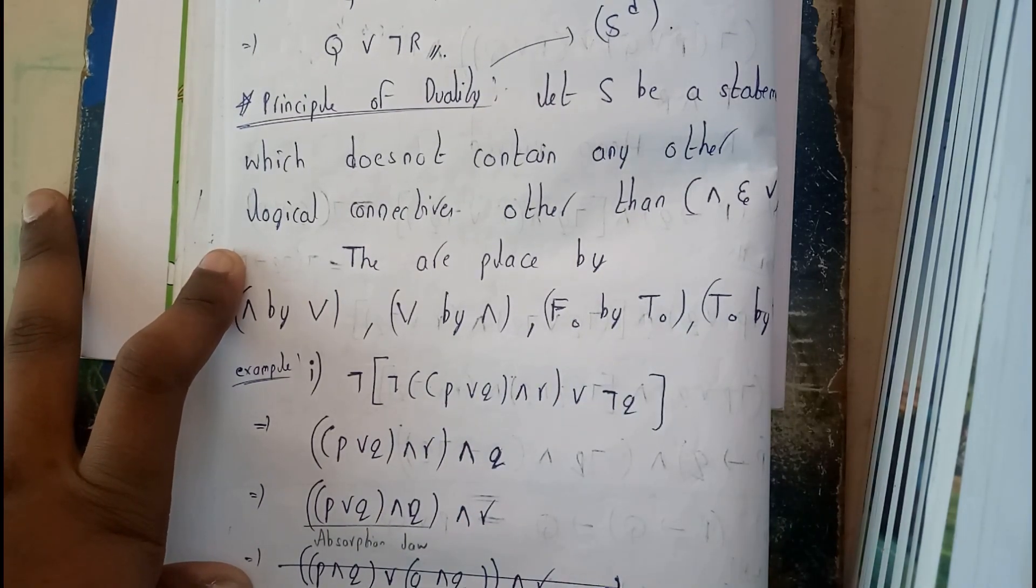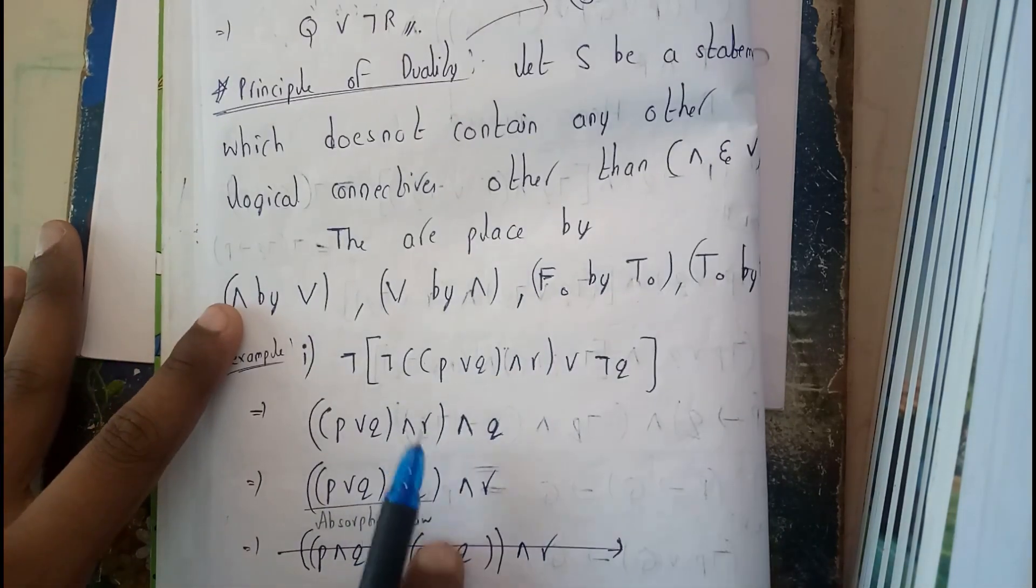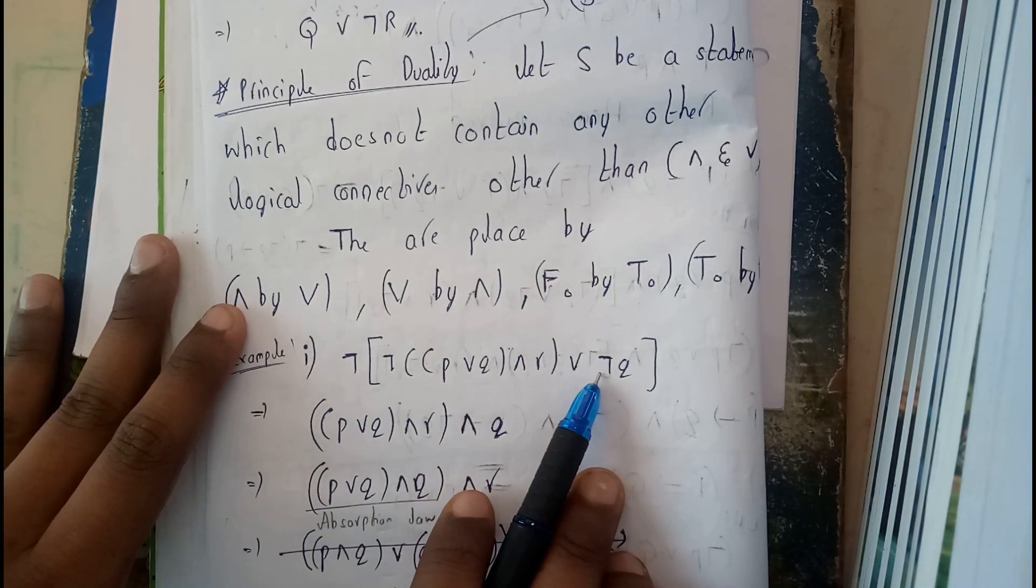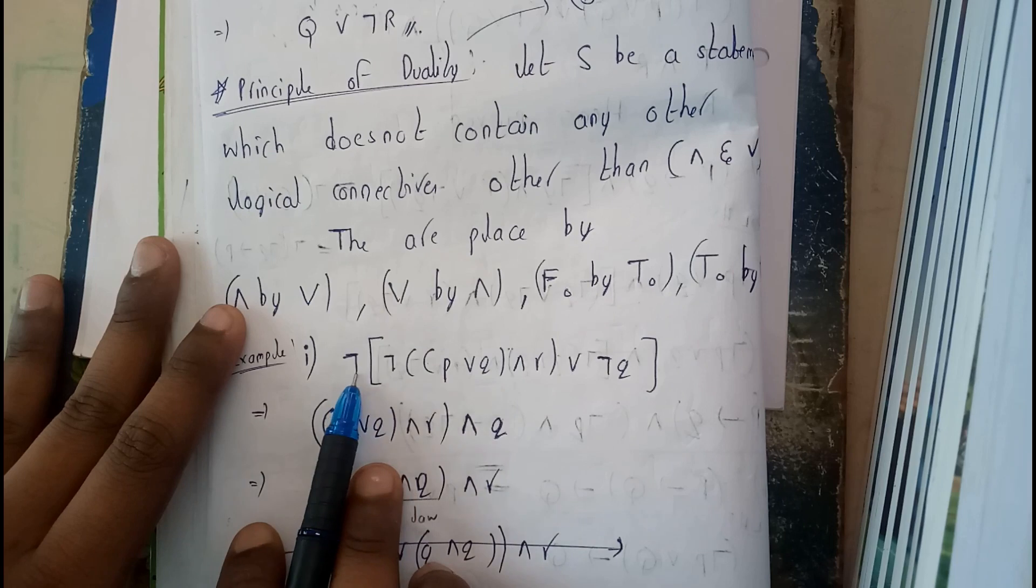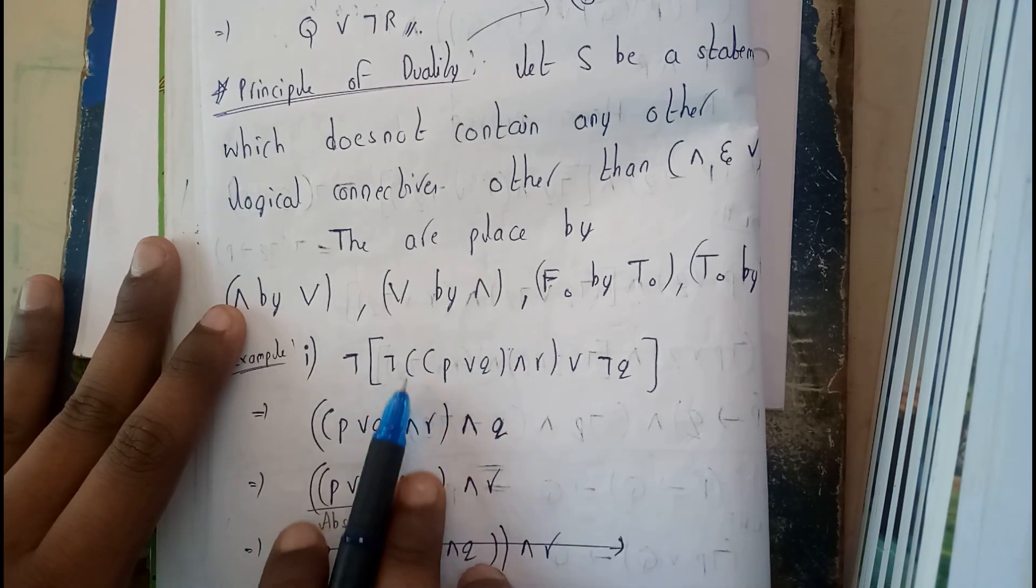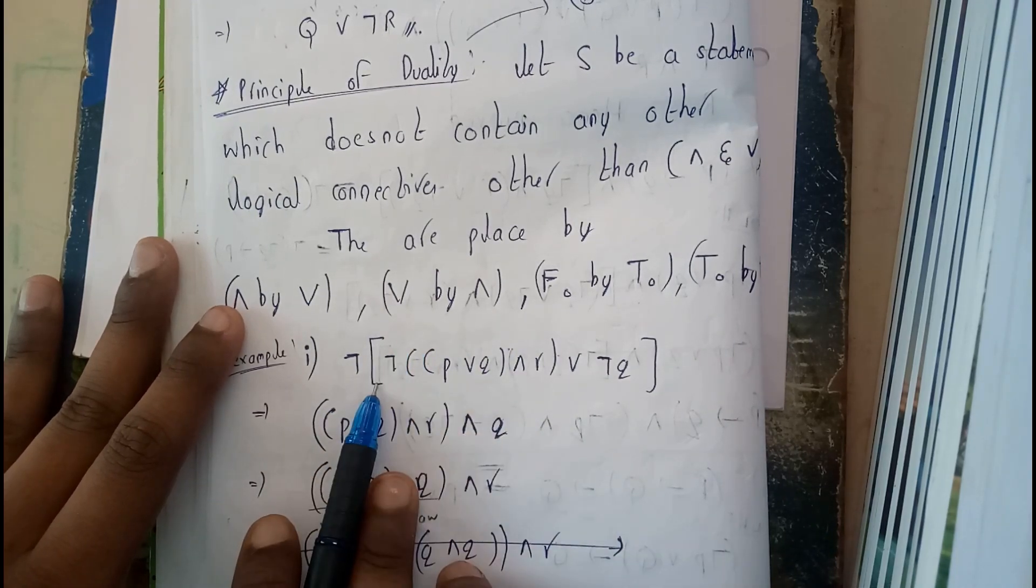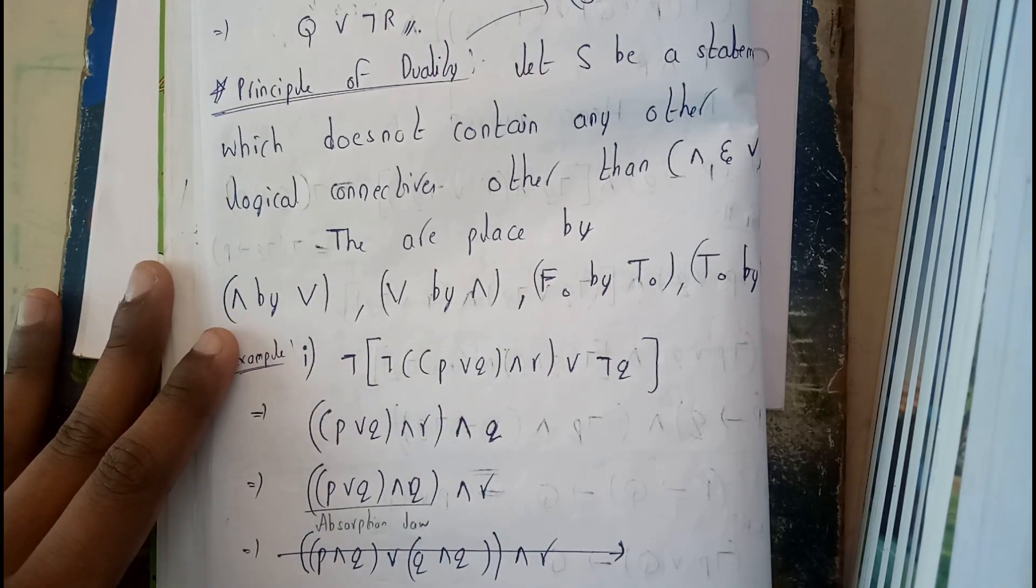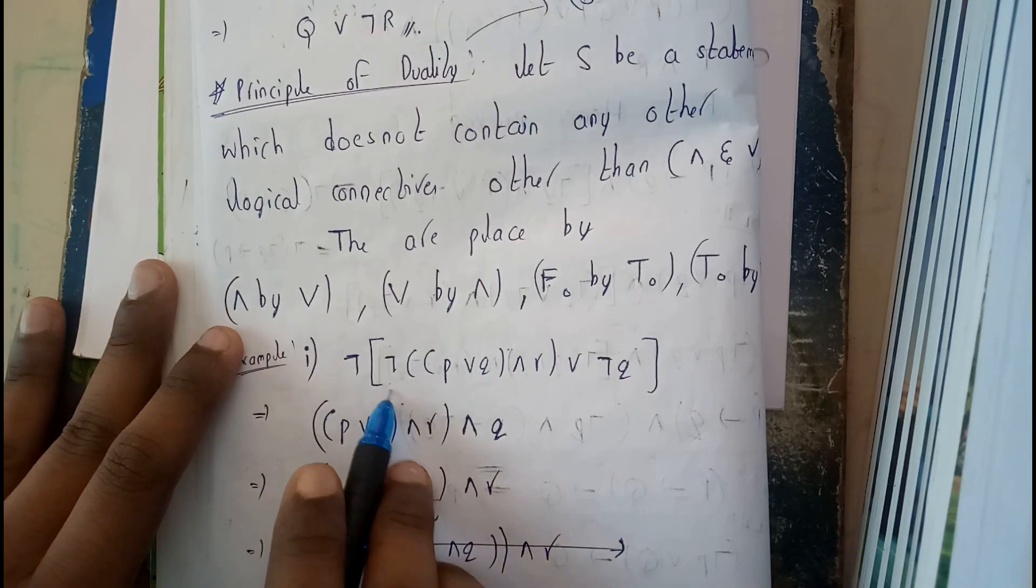Negation of this whole part is applying negation, so this negation will be canceling off as the first law—the law of double negation. Negation of negation means you'll be getting the result. Next, negation of OR, you'll be getting AND.